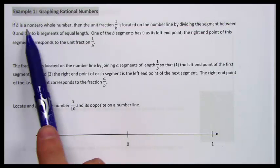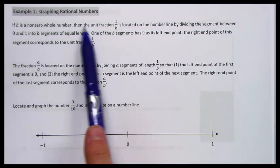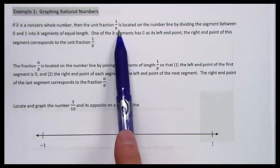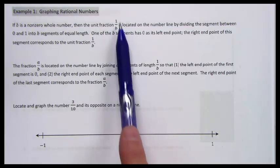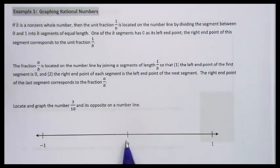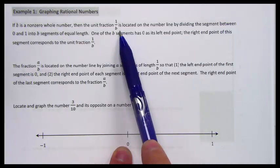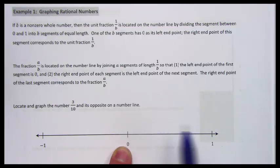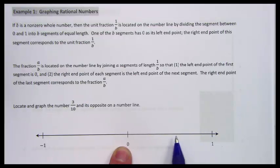The idea is that if we want to graph a number on the number line, and we have b as a whole number and we want to locate the unit fraction one over b — like say we want to do one-half — we need to divide the distance between zero and one by the number on the bottom. If we're doing one-half, we'd divide it into two pieces; thirds into three pieces; fourths into four pieces, and so on. Then to locate the fraction, we take the numerator and count over that many segments.